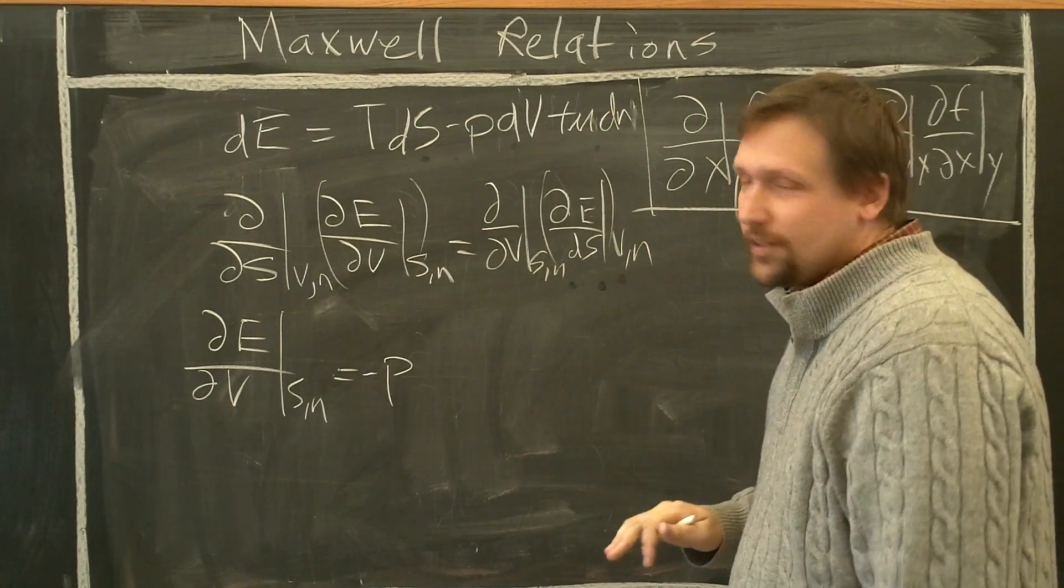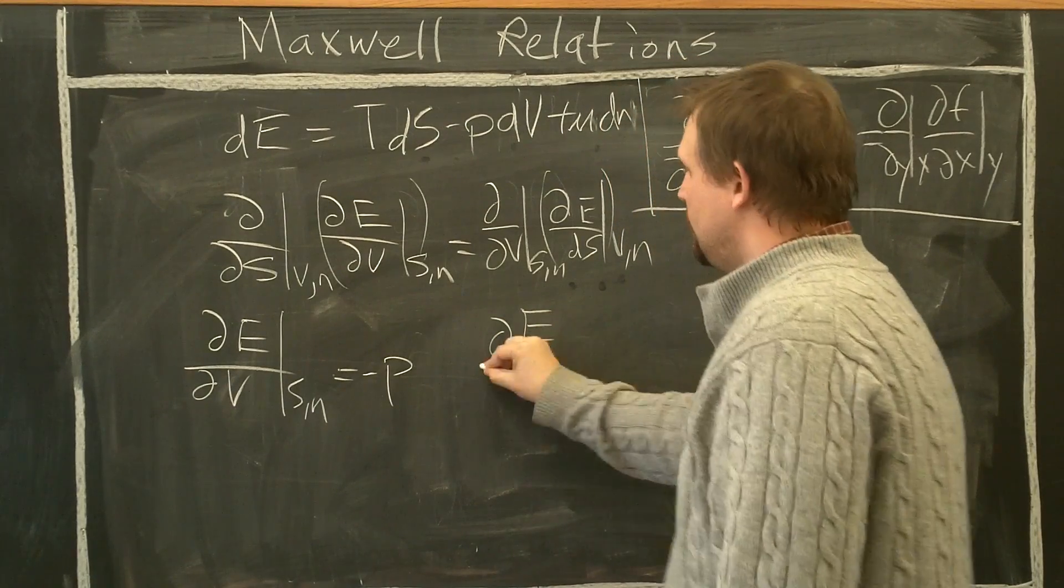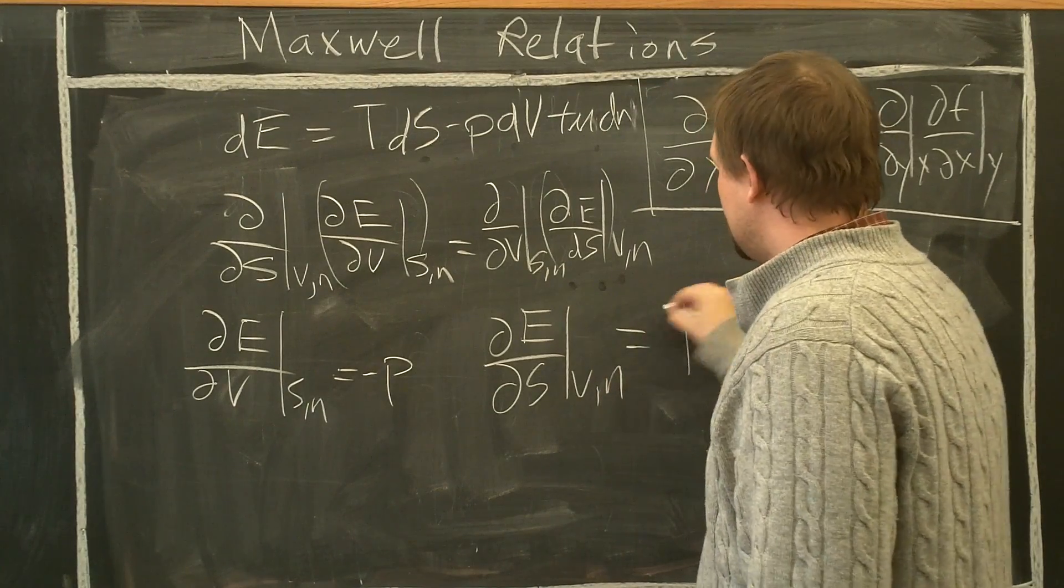∂E/∂S is equal to T, V is fixed, zero, N is fixed, that's also zero. So ∂E/∂S, V comma N equals T.